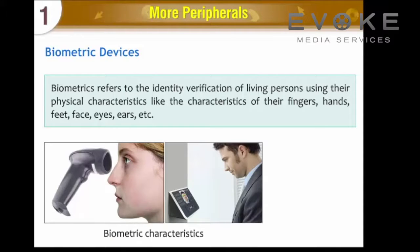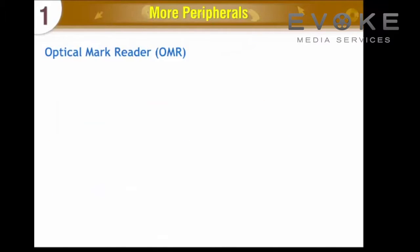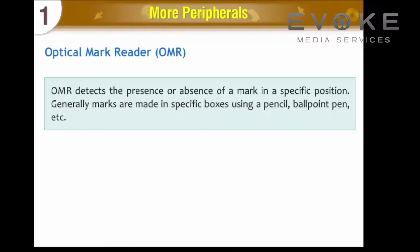Optical Mark Reader (OMR) detects the presence or absence of a mark in a specific position. Generally, marks are made in specific boxes using a pencil, ballpoint pen, etc.